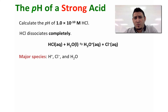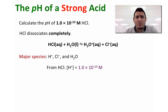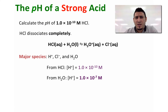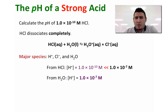The major species in solution are H⁺, Cl⁻, and water. The concentration of H⁺ produced by HCl is 1.0×10⁻¹⁰ molar. However, the concentration of H⁺ coming from water is 1.0×10⁻⁷ molar. The H⁺ from HCl is way smaller than that from water, and that is why we will neglect it.